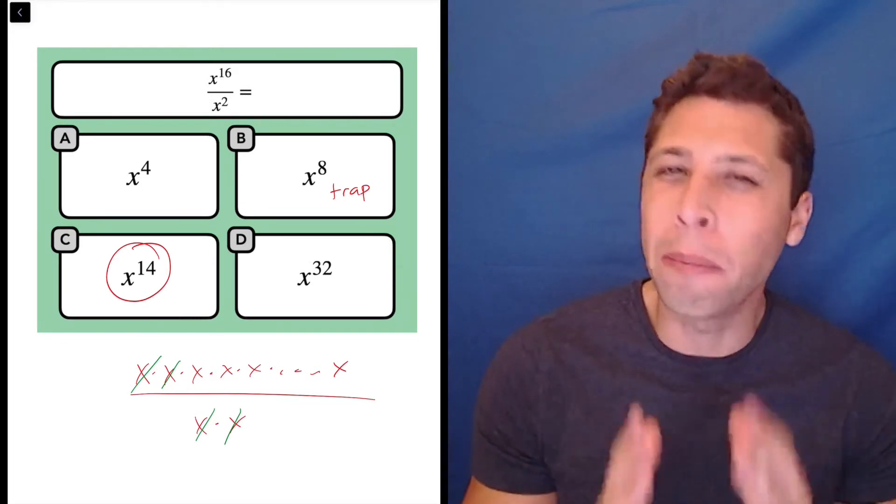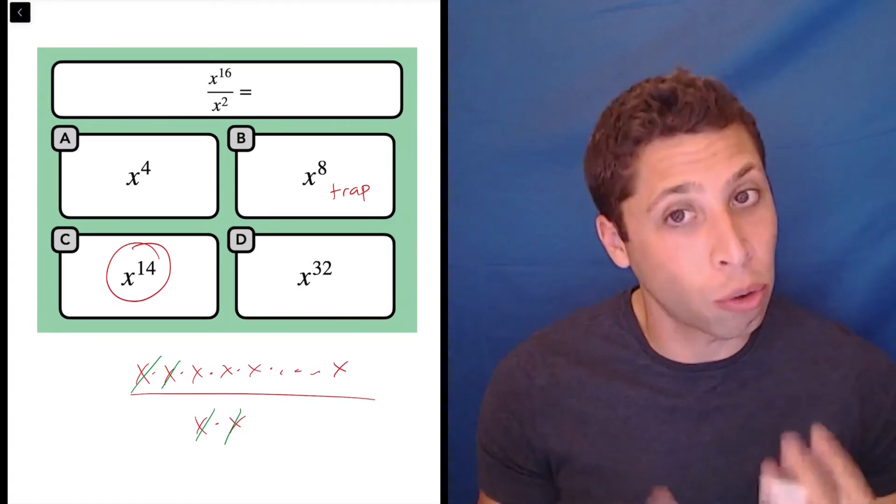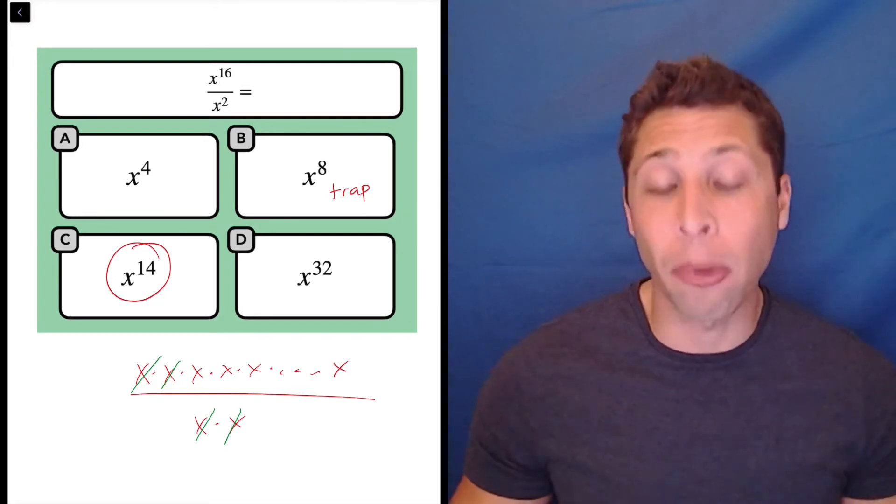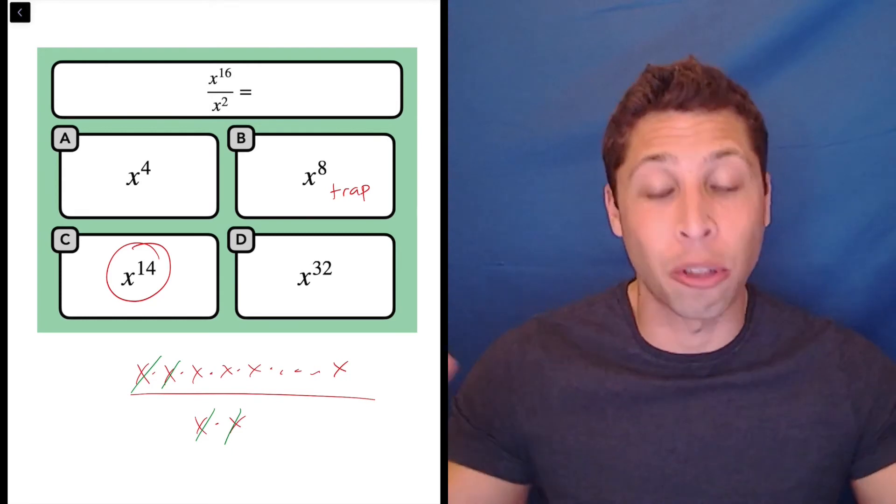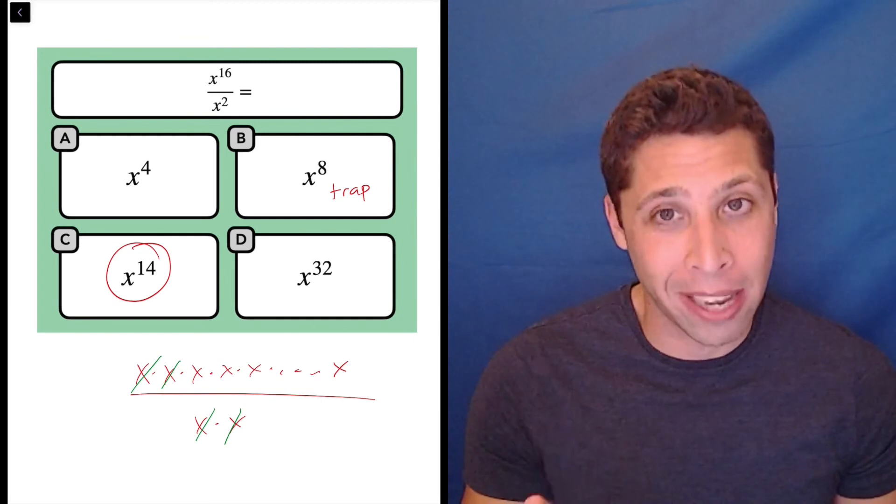It's a very simple rule, but for whatever reason, that impulse to just do the operation that you see is so strong. When you see division, you want to do division. But you've got to memorize these rules. When they come up, it's going to be impossible to deal with big numbers. This is the one that people mess up the most, so pay attention.